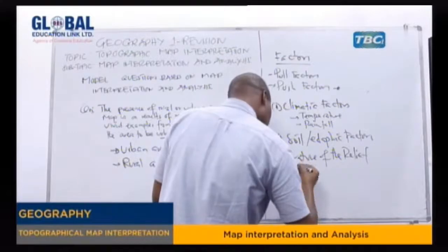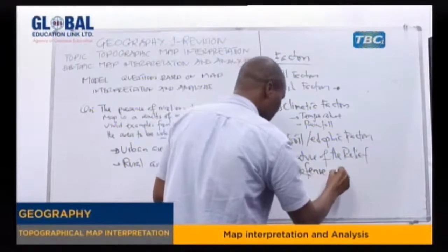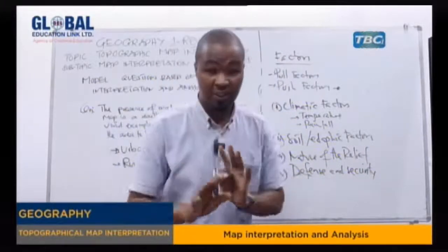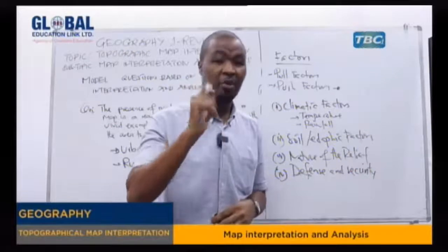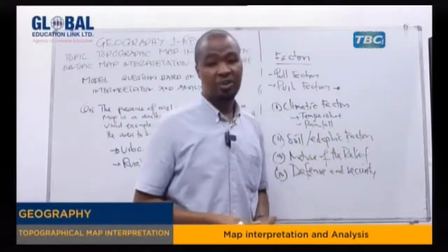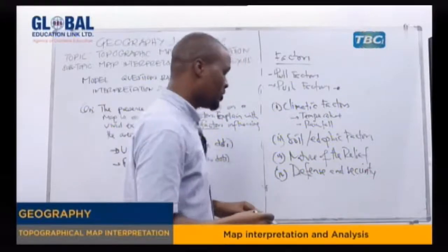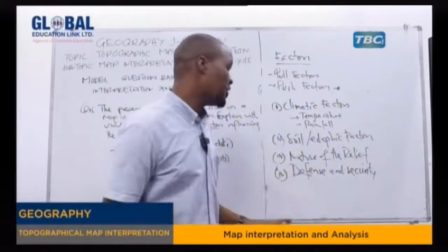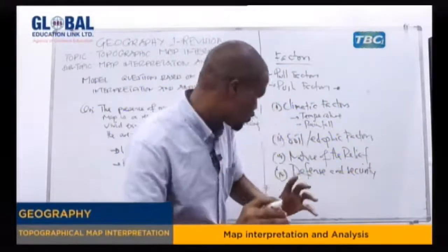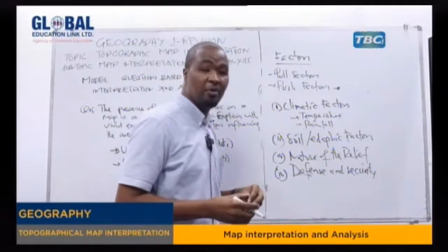Another factor is defense and security. Most people prefer to live in areas of political stability. In areas of political instability — such as wars and civil wars — people tend to shift to areas with political stability. Areas with good defense and security tend to have more people, while areas of insecurity have fewer people.